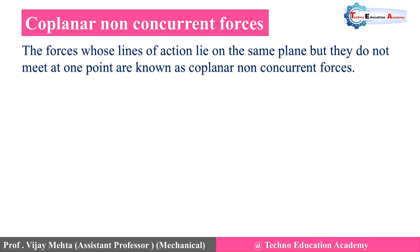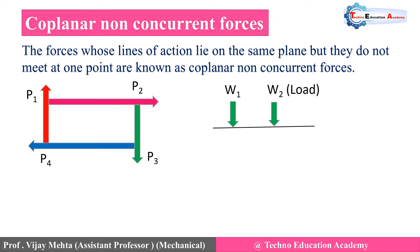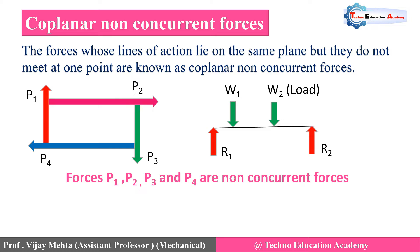The next type is co-planar non-concurrent forces. Here the forces are acting on the same plane but they do not meet at the same point. Here we are considering four forces P1, P2, P3, and P4 — they do not meet at the same point, but their line of action is on the same plane, so it is called co-planar. Since they do not meet at the same point, it is called non-concurrent. So this is the combination of co-planar non-concurrent forces.